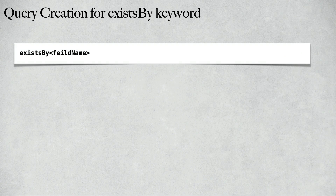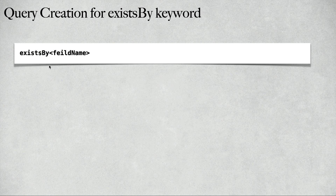To create the query method for that requirement, we can make use of the ExistsBy keyword followed by the field name. For example: existsByEmail, existsByUsername, existsByLocation. The field name is derived from the entity class. The entity class contains the fields or properties, and ExistsBy is followed by the field name in which we want to check the existence of the value.